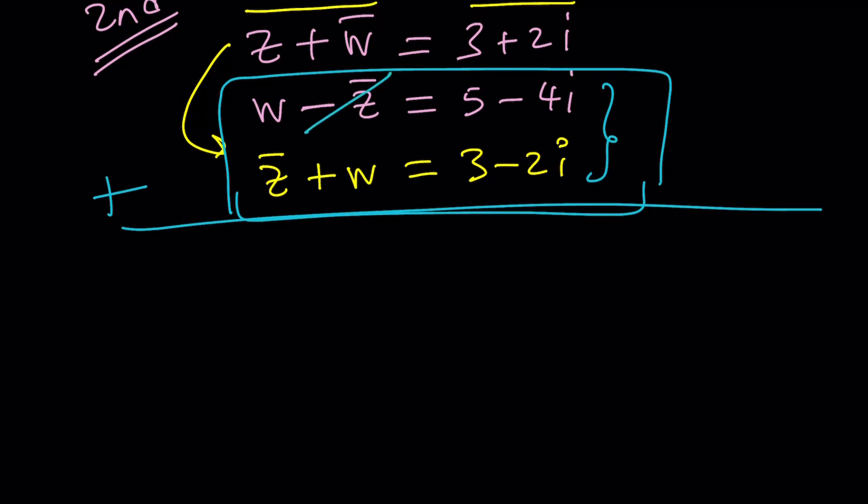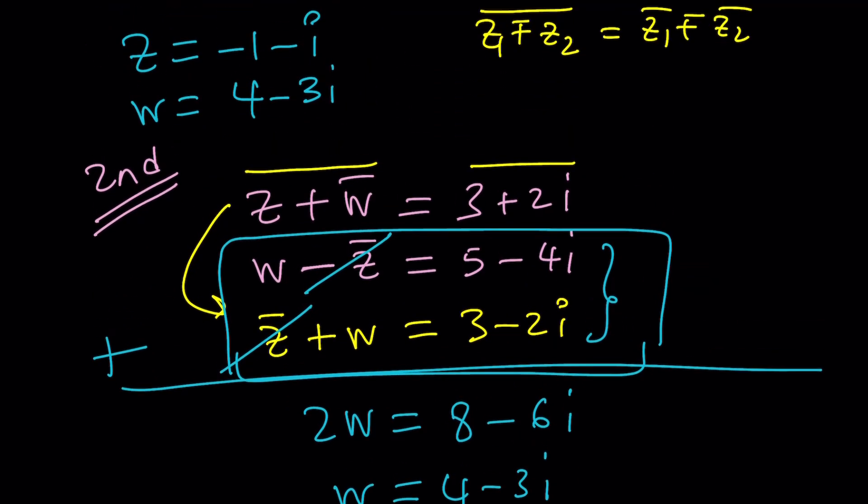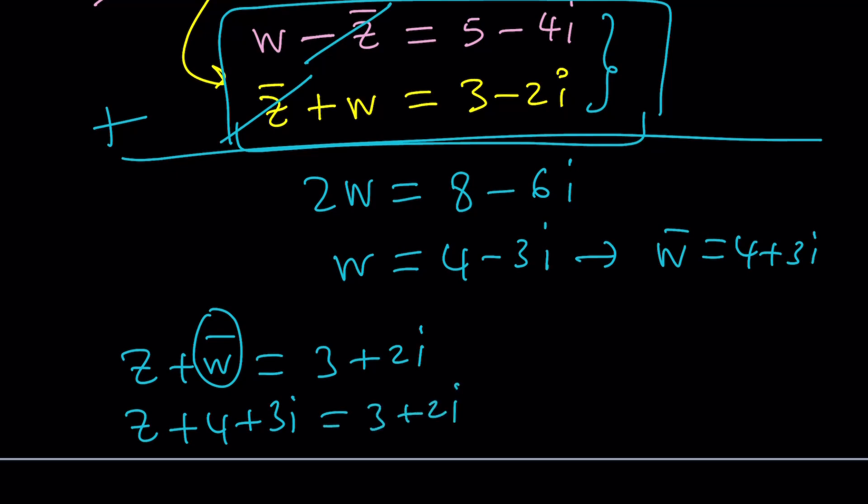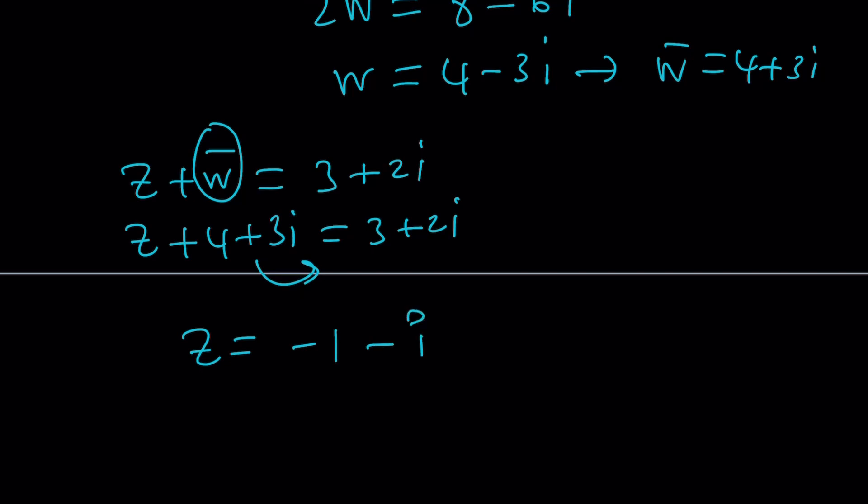If you add these two equations Z bar is going to cancel out leaving us with 2W. That's just awesome. From here we can divide both sides by 2 and get W as 4 minus 3i. Now how would you get Z? You can plug in W into the top equation. Z plus W bar is equal to 3 plus 2i. If W is 4 minus 3i, W bar is 4 plus 3i. You're going to get Z plus 4 plus 3i equals 3 plus 2i. If you subtract this you get Z equals negative 1 minus i. That's the exact same solution. So our solutions check.